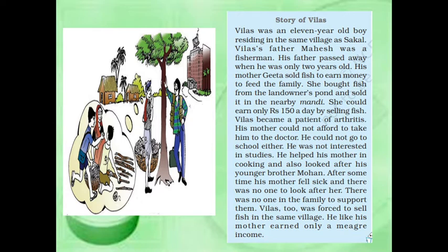Villas was an 11-year-old boy residing in the same village as Shakaal. Villas' father Mahesh was a fisherman who passed away when Villas was only two years old. His mother Geeta sold fish to earn money to feed the family. She bought fish from the landowner's pond and sold it in the nearby Monday market, earning only rupees 150 a day. Villas became a patient of arthritis; his mother could not afford to take him to the doctor. He could not go to school either, as he was not interested in studies. He helped his mother in cooking and also looked after his younger brother Mohan.